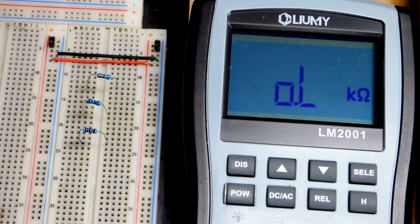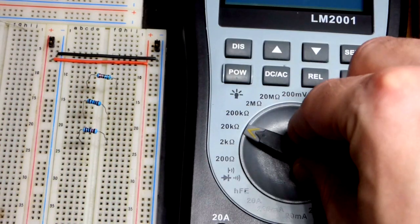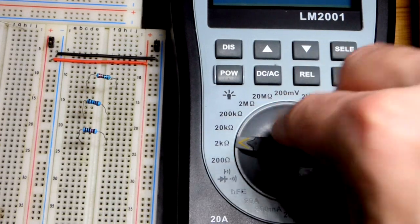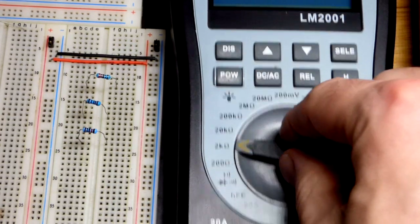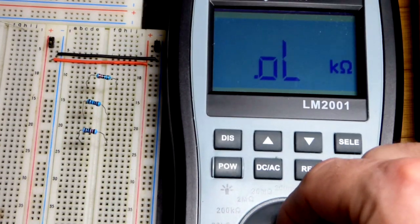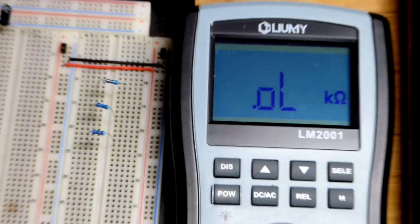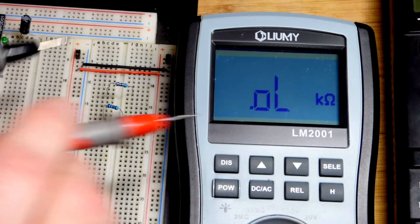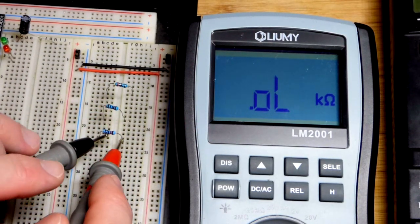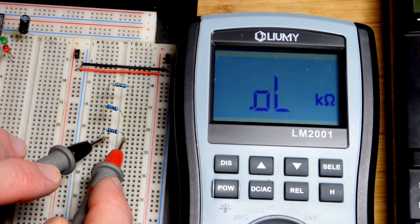That's because of the setting that we have it at. For a more accurate reading for the lower values, we will go down to 2k. Ideally you would get a setting that's just slightly higher than the resistor you're going to measure, but this meter has some weird values on it. I think that's one reason why they upgraded.